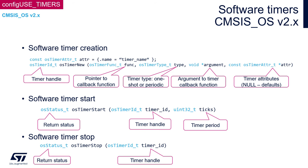Now let's look at the main CMSIS OS version 2 API functions for software timers. Remember that configUSE_TIMERS must be set in FreeRTOS config.h to use these API functions. To create a software timer, call osTimerNew. It requires four arguments: a pointer to the callback function; the timer type — one-shot or periodic; an argument to the timer callback function, usually NULL; and timer attributes specified in an osTimerAttr_t structure, where typically only the name is defined (or NULL if no name is needed). This function returns a handle to the newly created software timer, or NULL if there was a problem — usually a memory allocation issue.